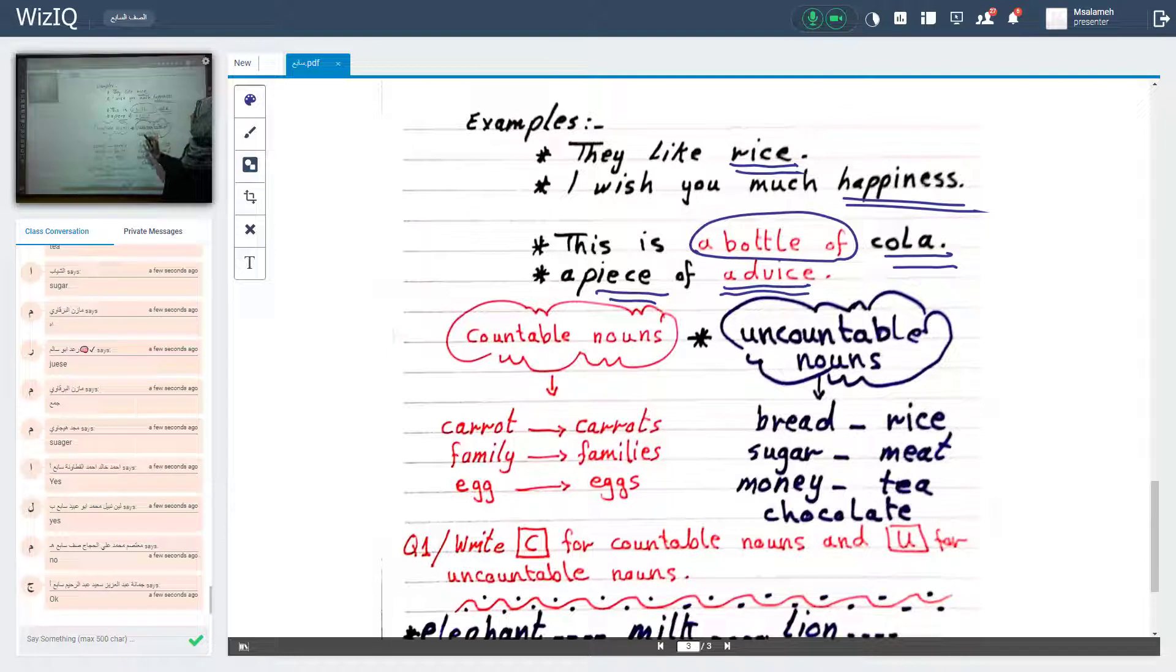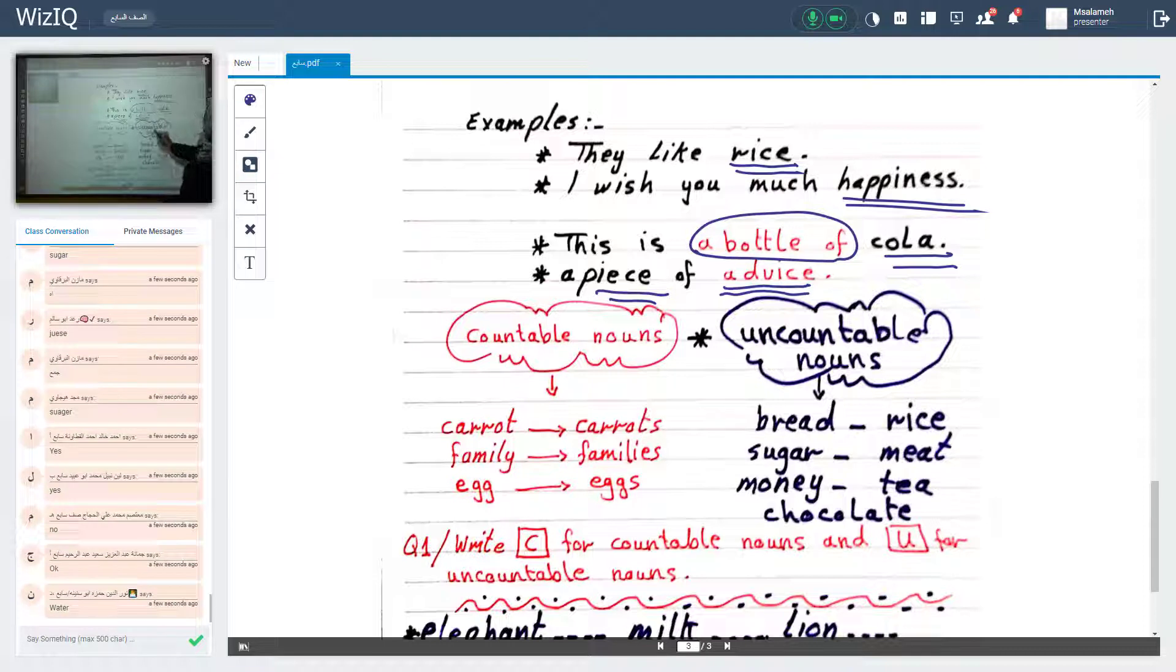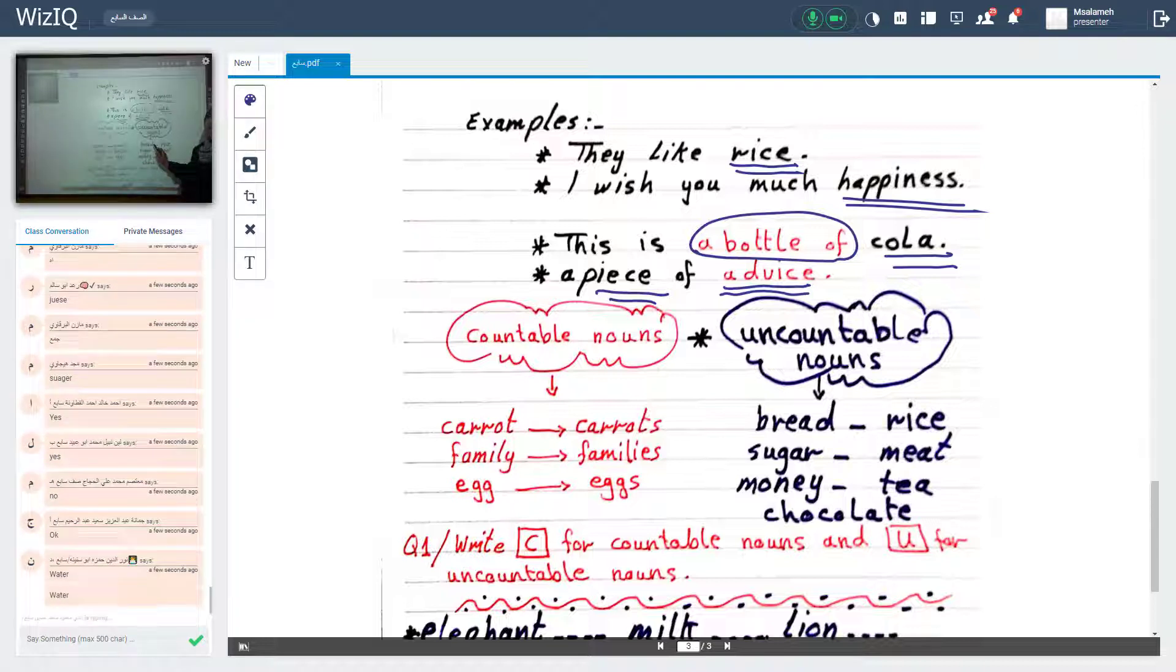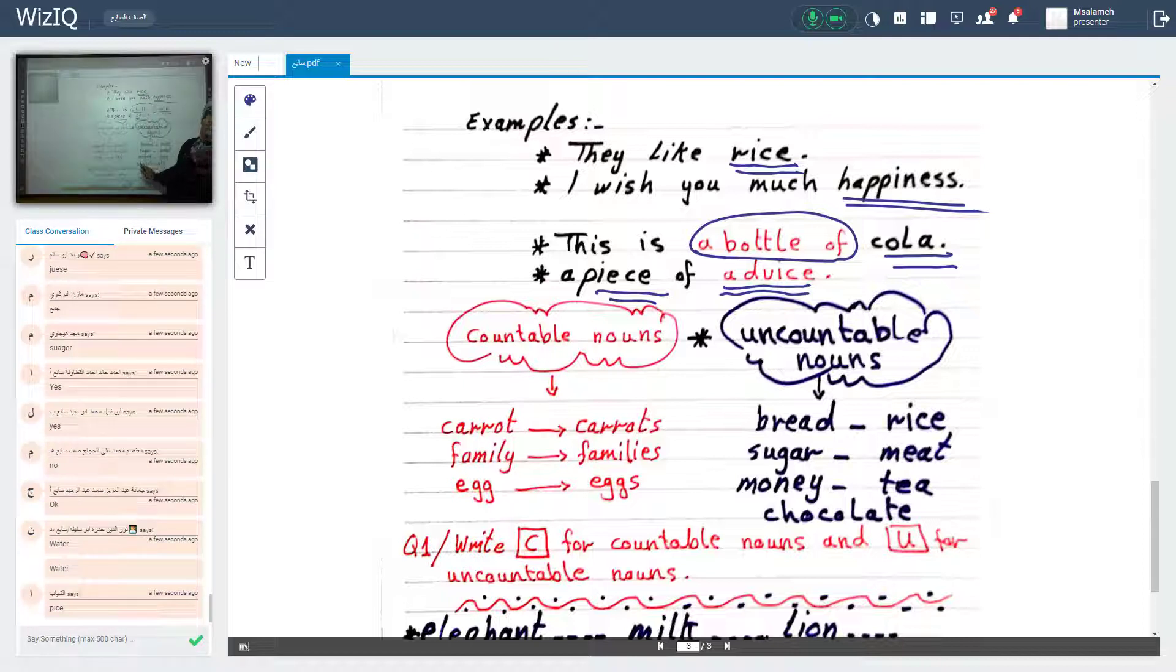Look at here. Countable nouns. Like carrot, carrots. Family, families. Egg, eggs. Look at uncountable nouns. Bread. الخبز طبعاً. Bread. Rice, sugar, meat. Money. Tea, chocolate. لما بحكي لك a bar of chocolate. يعني أنا صارت countable. أنا عديت القالب. ما عديت مادة الشوكولاتة نفسها. ماشي?